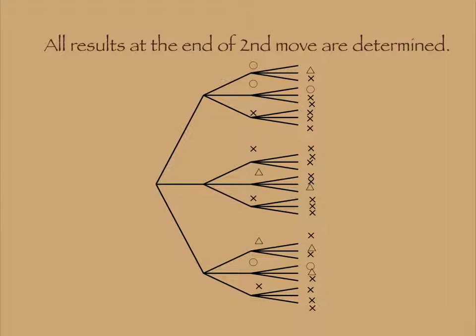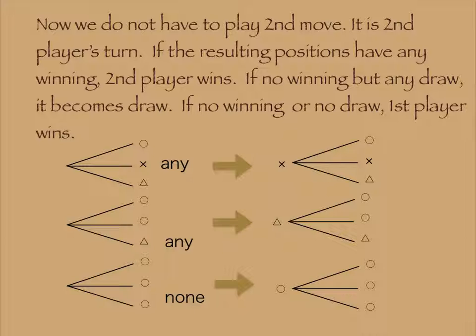All outcomes at the end of the second move are determined. Now we do not have to play the second move. It is second player's turn. If the resulting game positions have any winning, second player wins. If no winning but any draw, it becomes draw. If no winning or no draw, first player wins.